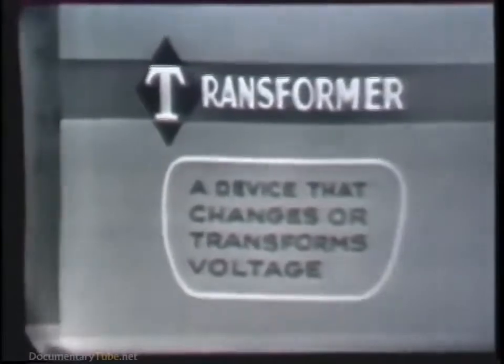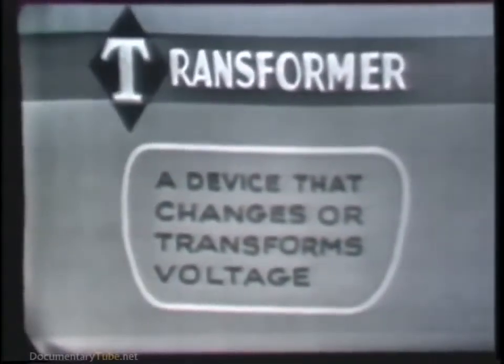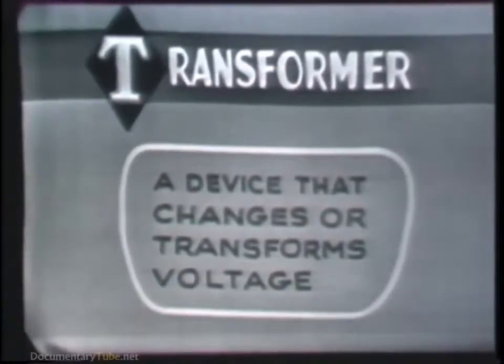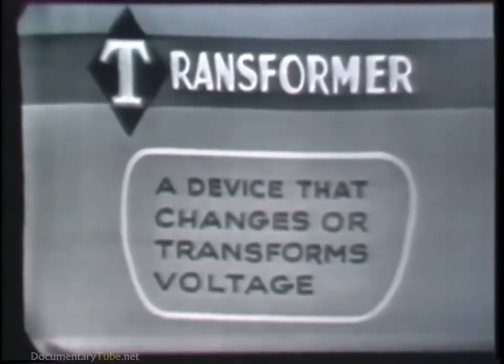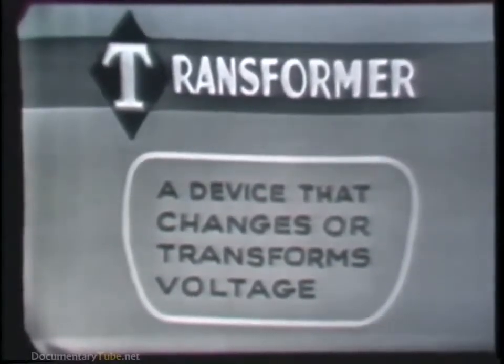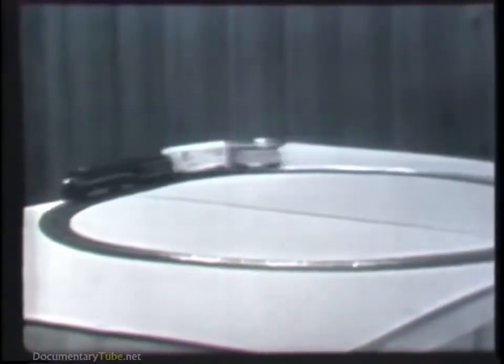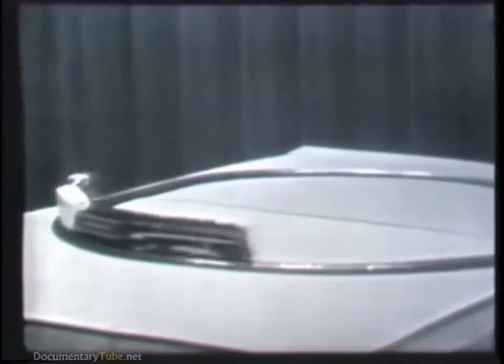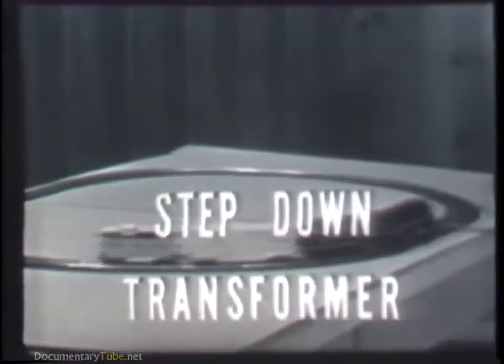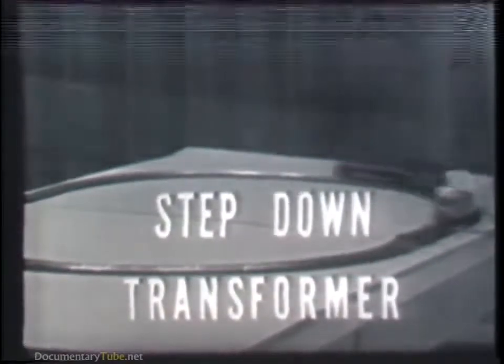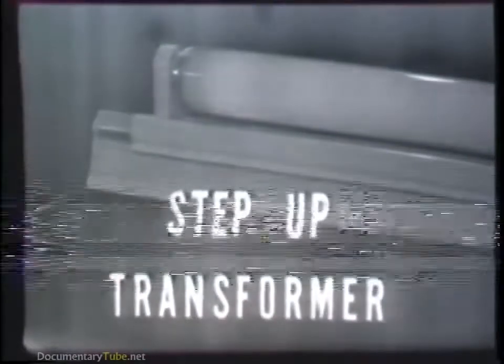Just what is a transformer? Well, basically we can say it's a device that does just what its name implies — it changes or transforms voltage. If the transformer reduces the voltage, as in the case of the train, it's called a step-down transformer. Whereas if the transformer increases the voltage, as in the case of the fluorescent light, it's called a step-up transformer.